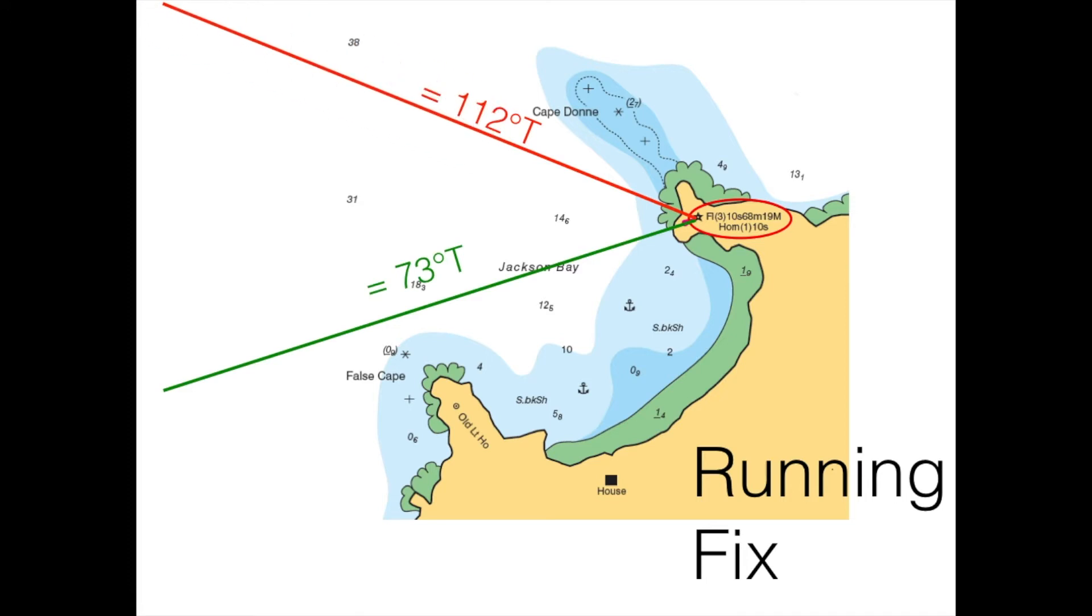Let's assume it's 112 degrees true. So at the time of that second bearing, we know we are somewhere along that red line, but we don't know where. All we know is, first we were along that green line, and a little bit later, we were along that red line. How do we solve that? We do that by plotting an estimated position. You take your course through water with one arrow, then you add the current with three arrows, and you get to the estimated position, EP here, drawn as a triangle.